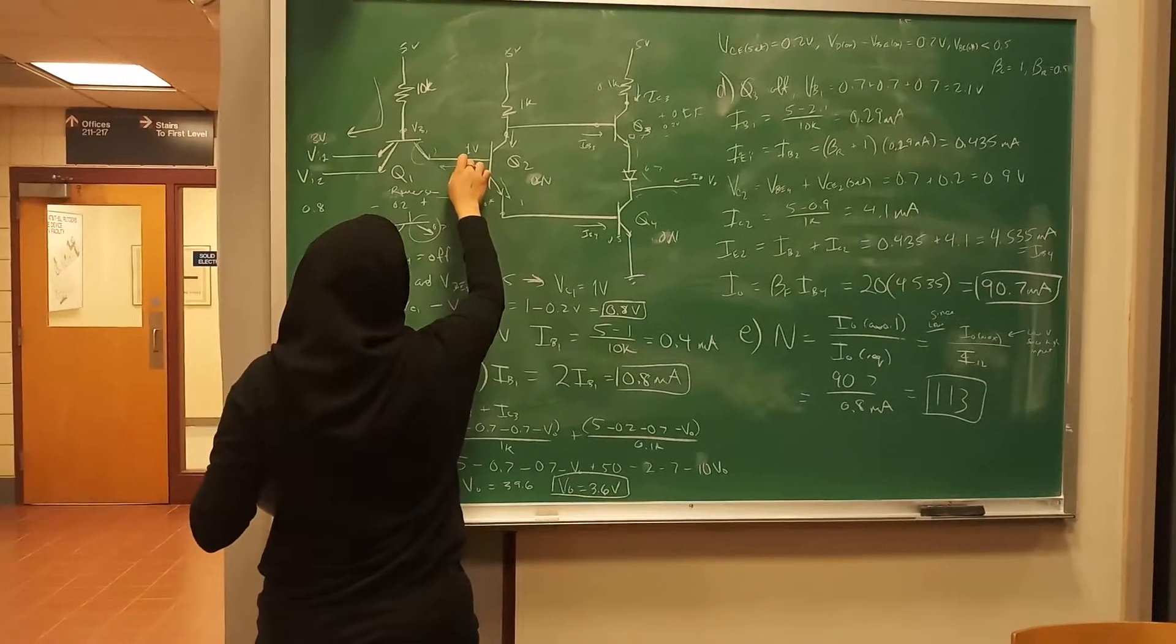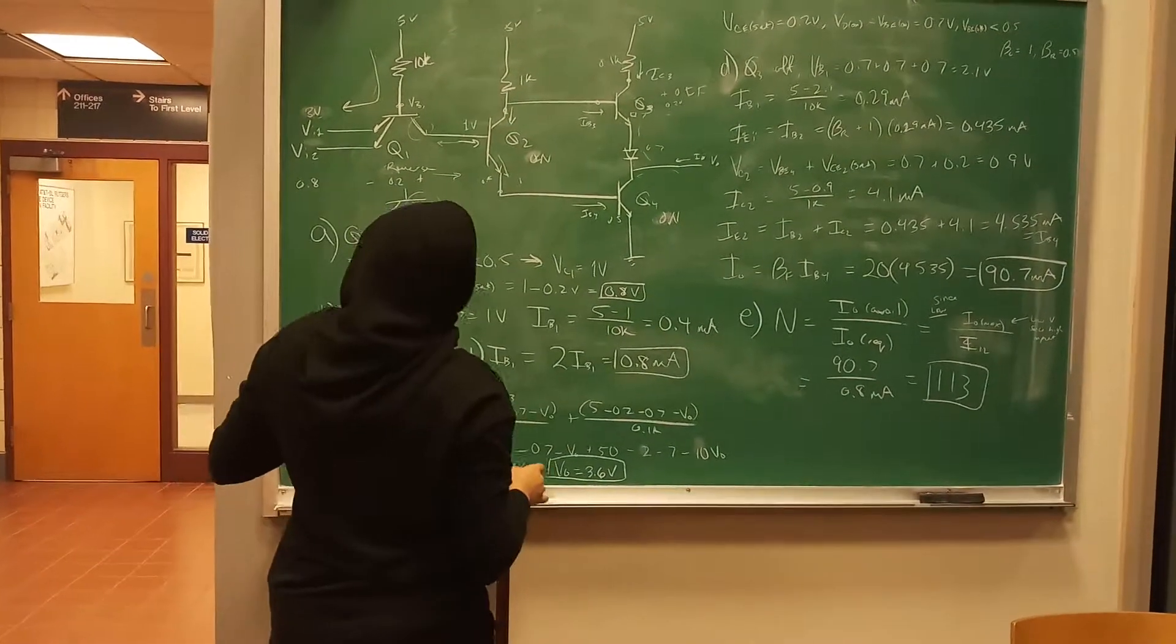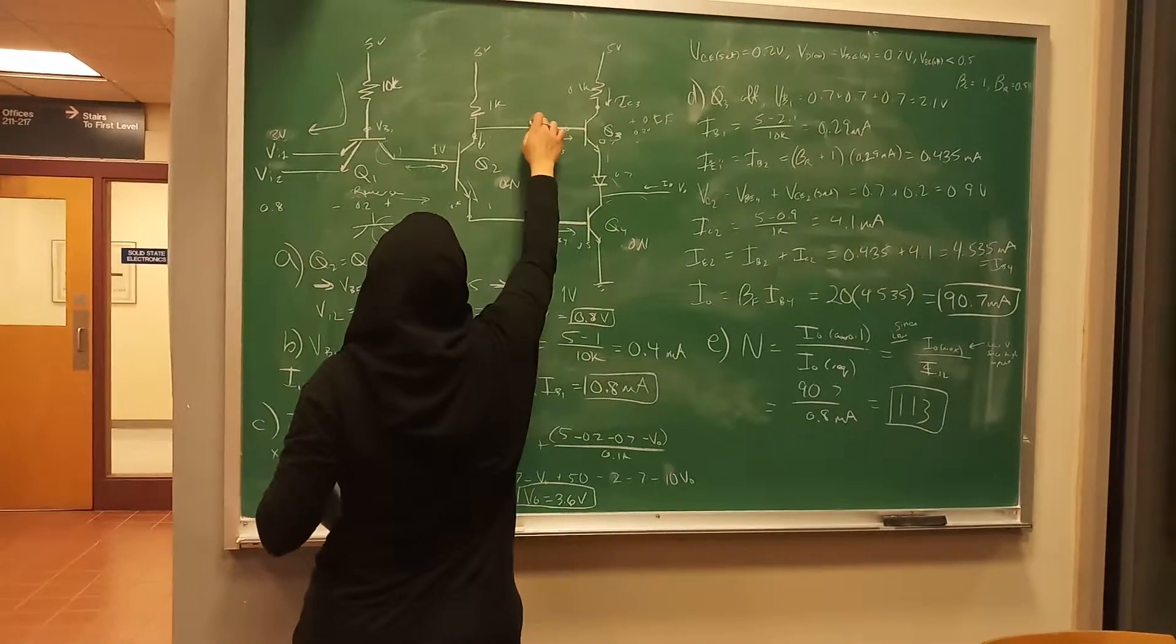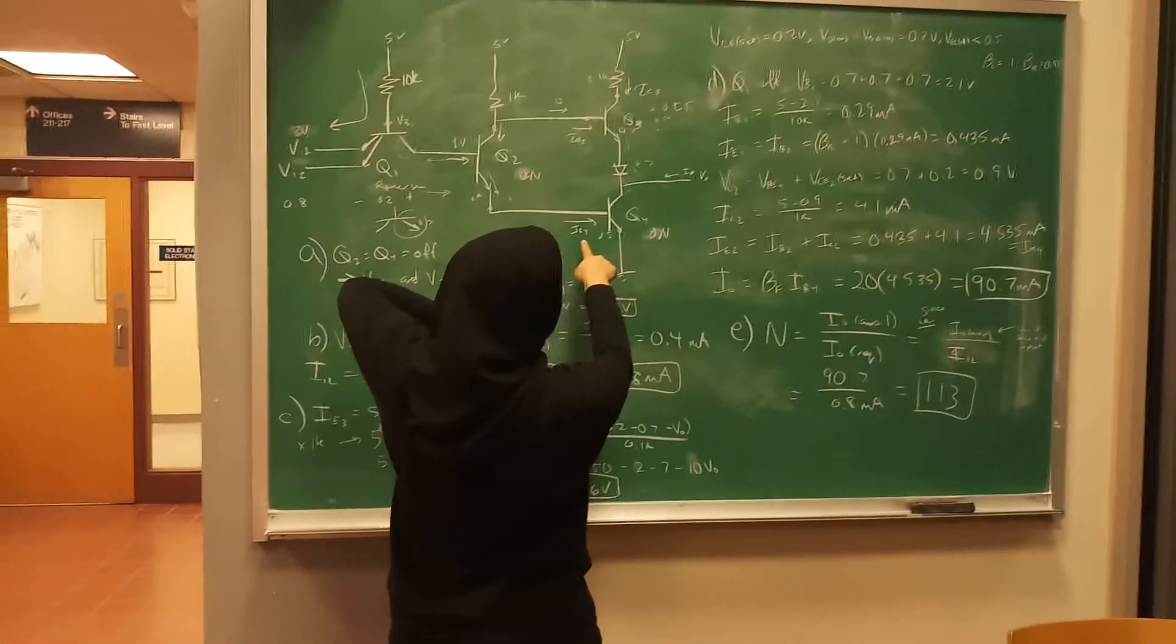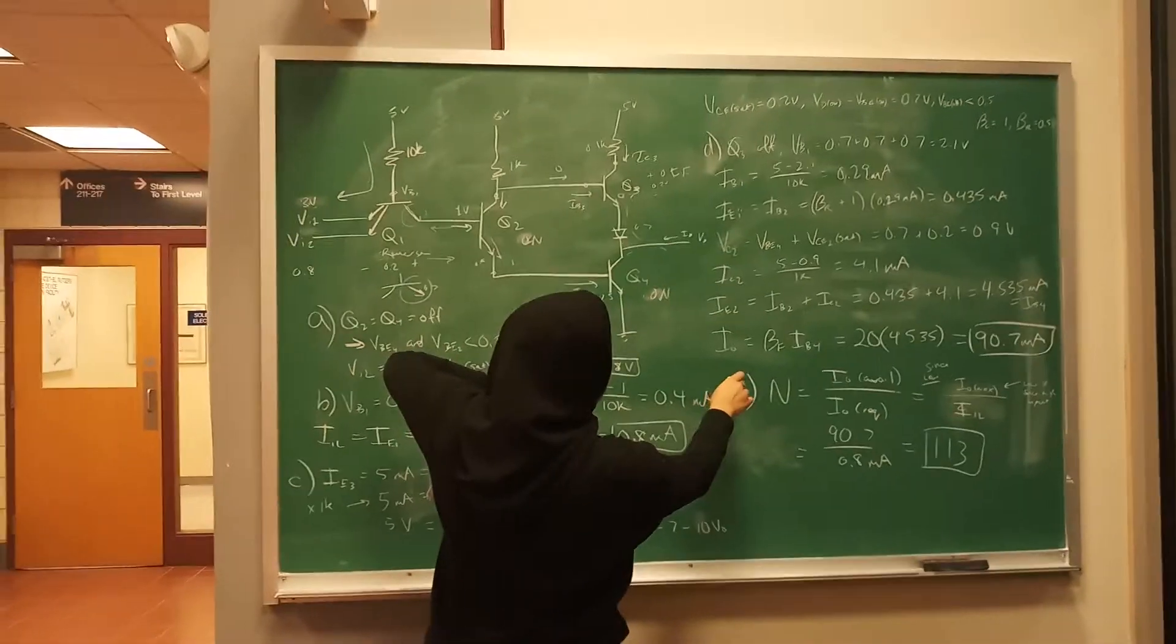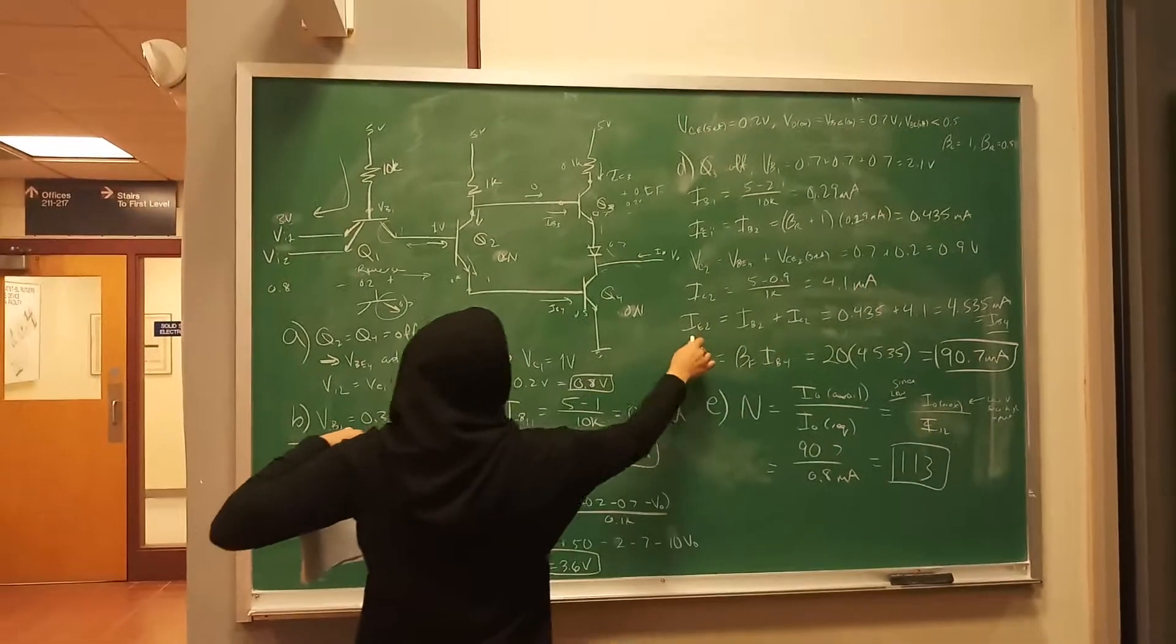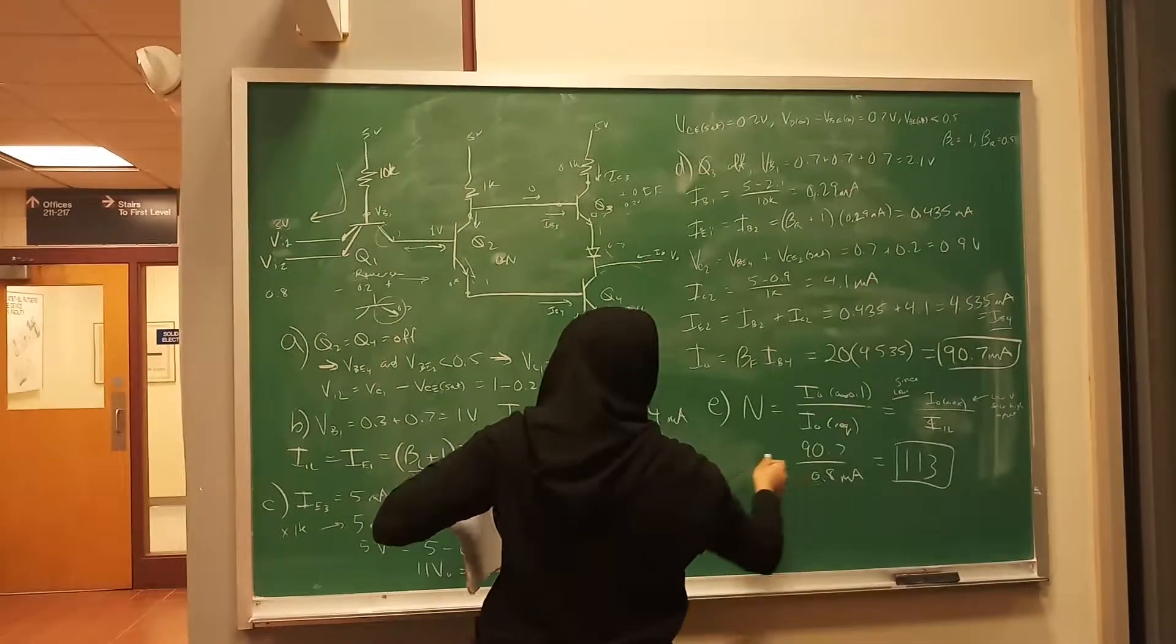So you have to calculate this plus this. And you know that this one is off, so nothing is going to go here. So this is 0. So this is I_E4. And yeah, you get, which is I_E4 right here. So this I_E2 is the same as I_E4. And then you get I_E4 as that.